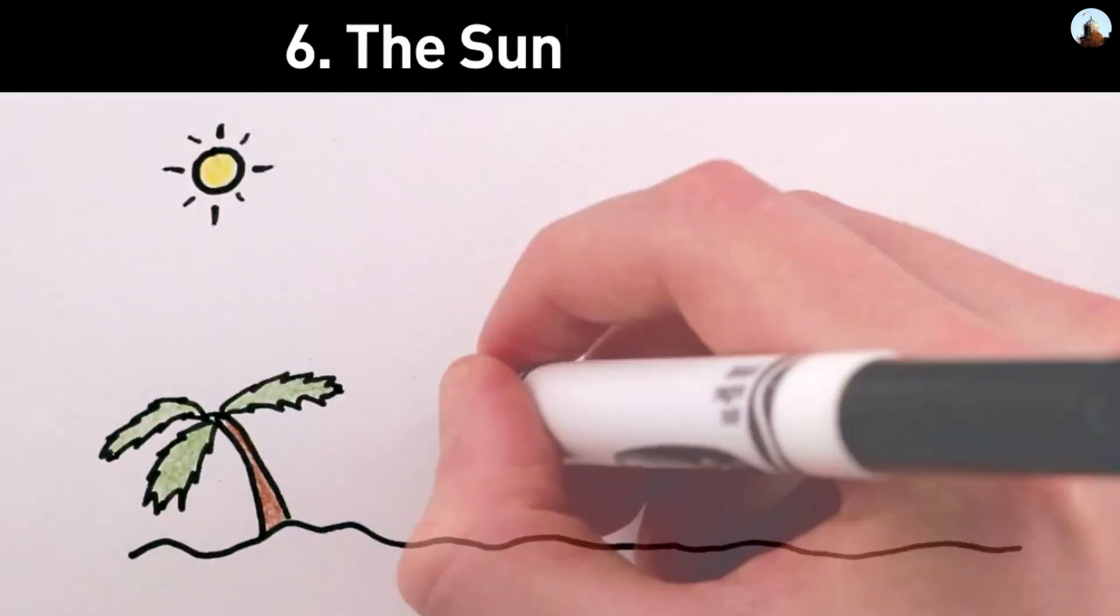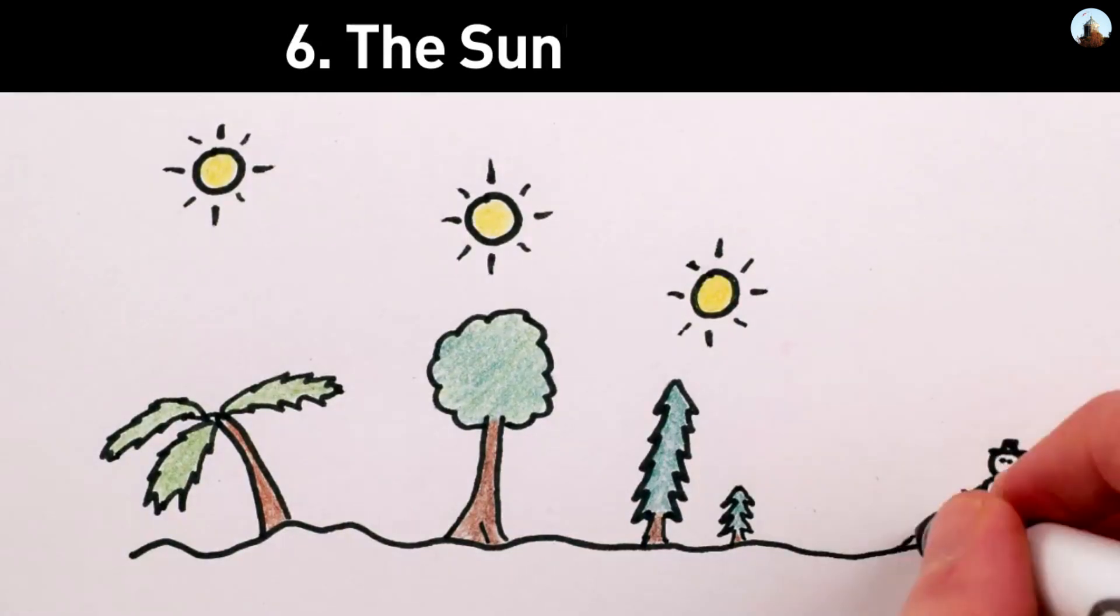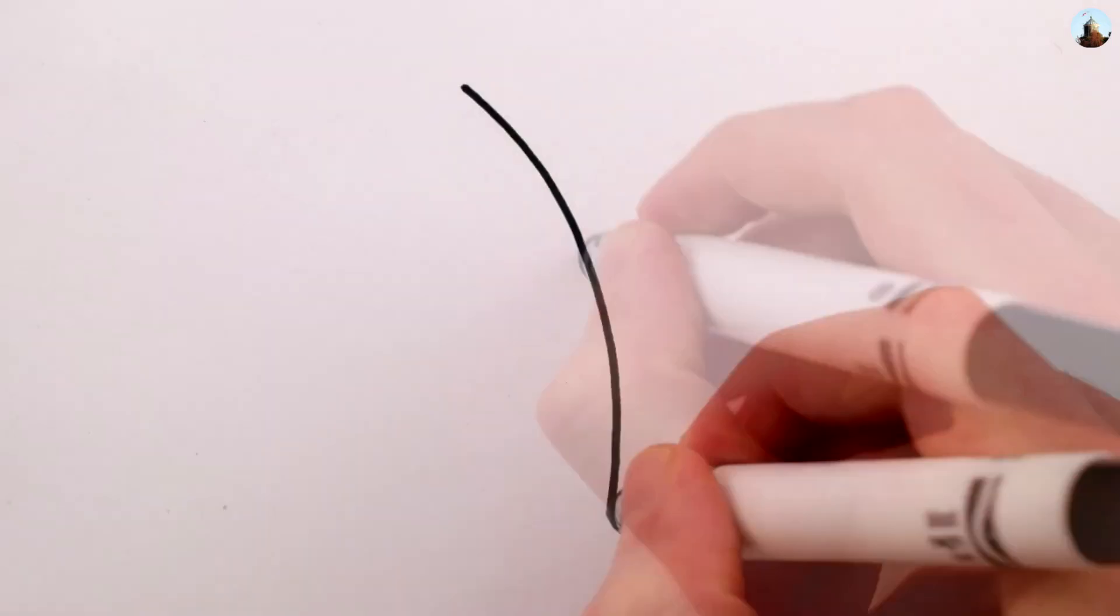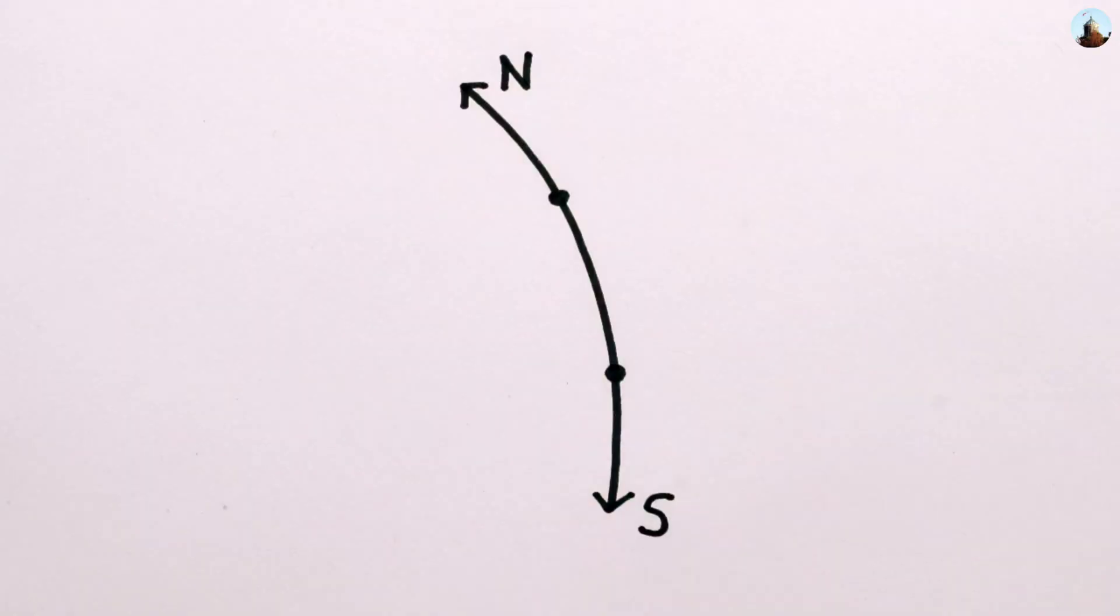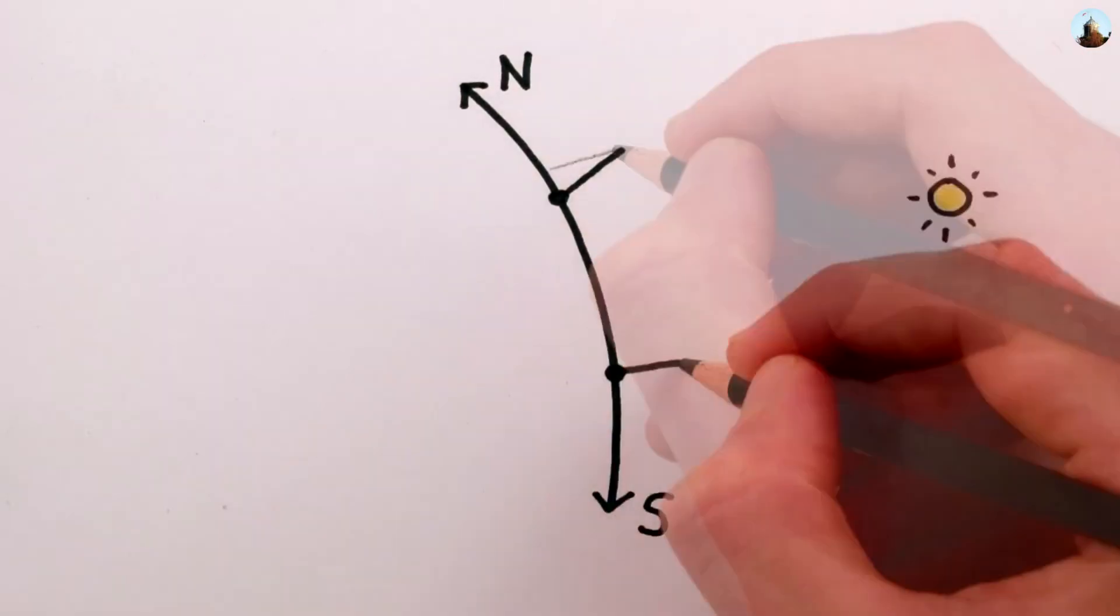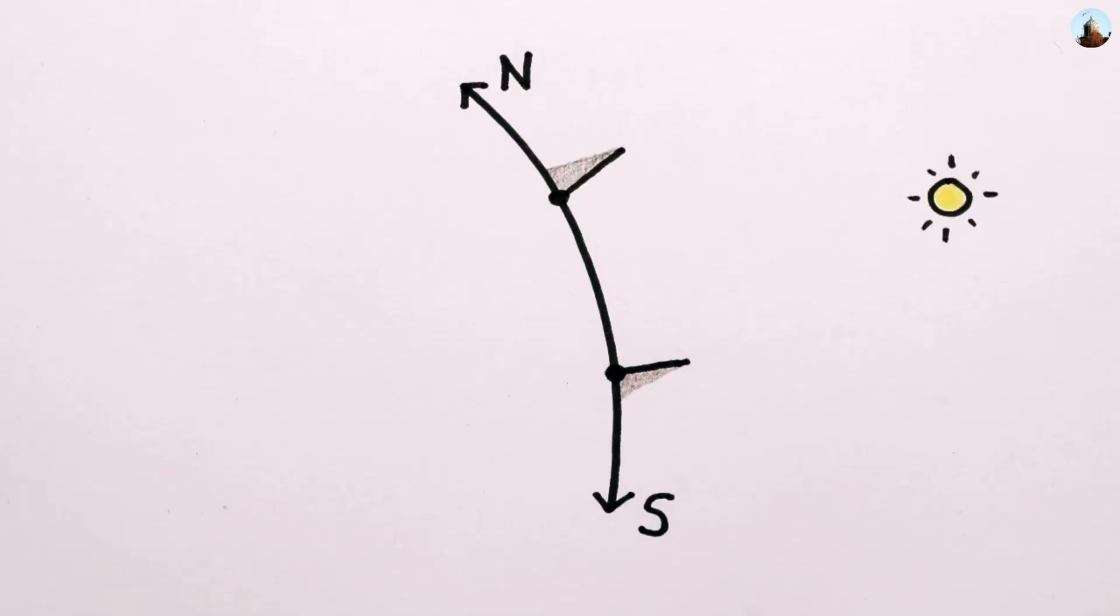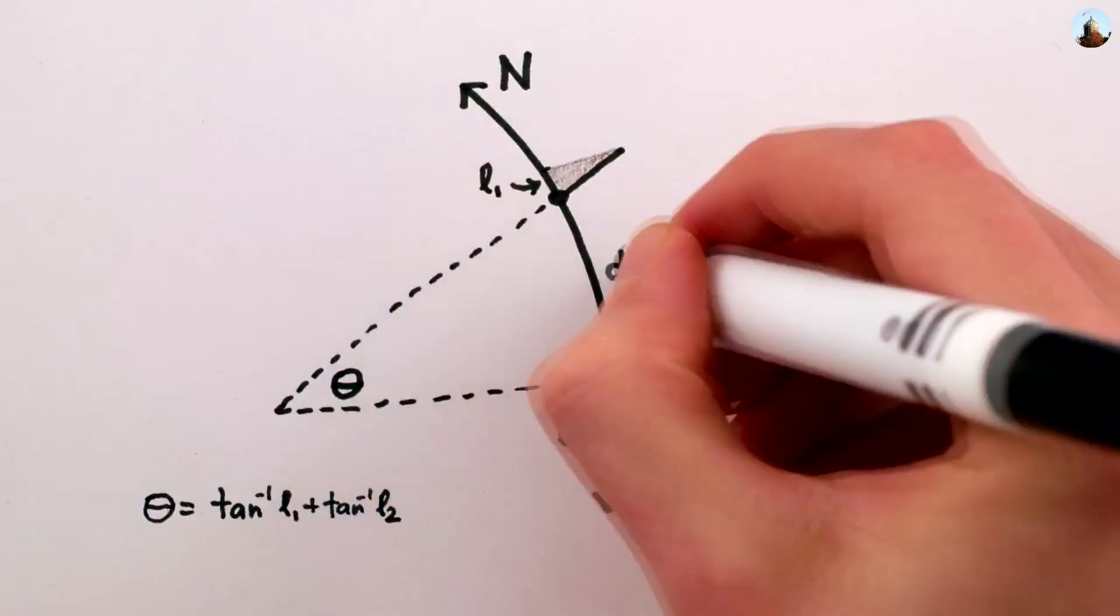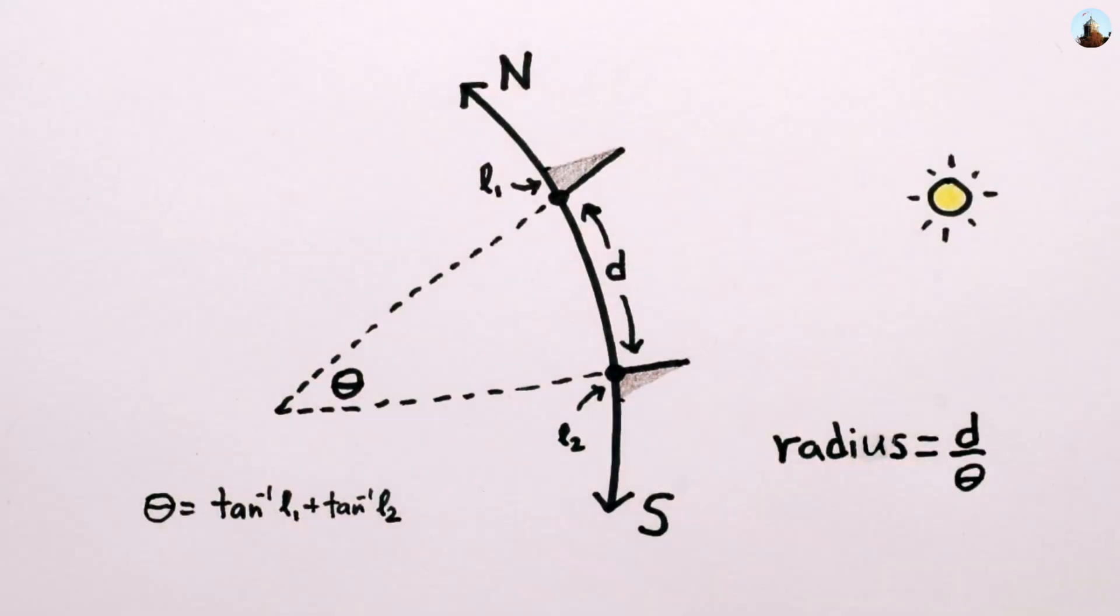Number 6. The Sun, in general, gets lower and lower in the sky as you travel away from the equator, and you can use this to directly measure the Earth's curvature. Pick two places a few hundred miles directly north and south of each other, and at noon, measure the shadows cast by a vertical meter stick at each location. You can use the shadow lengths to figure out the angle between the sticks, and once you add in how far apart they are, you can calculate the Earth's curvature.